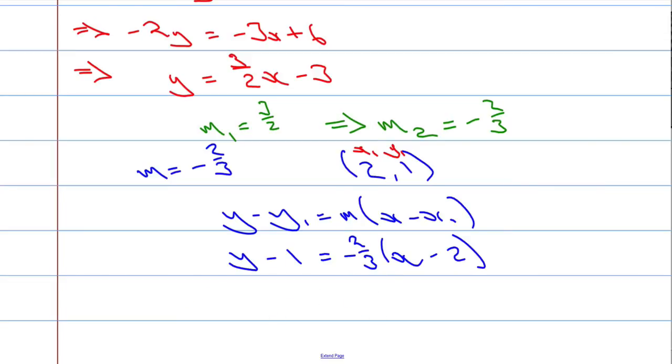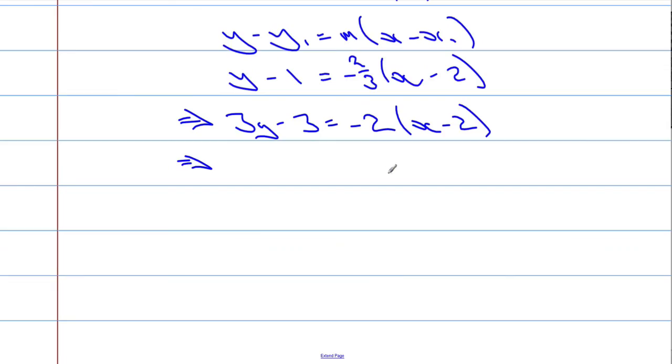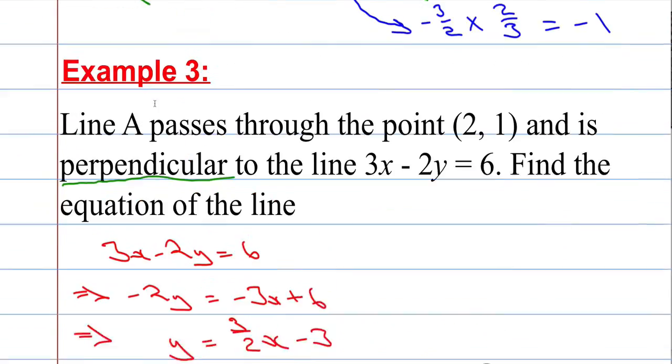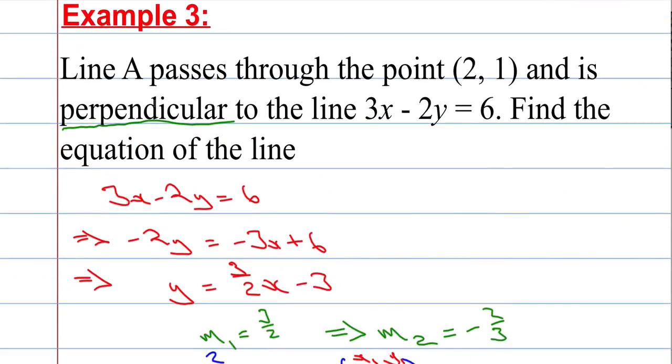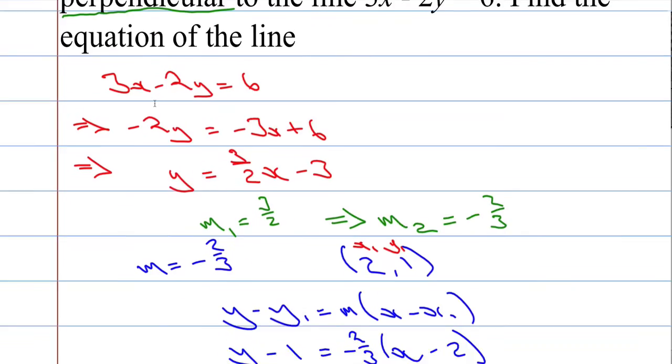Let's tidy this up now. I'm going to multiply everything by 3. So we get 3y subtract 3 equals negative 2 times x minus 2. And then we're going to expand out the bracket and get it in the form ax plus by plus c equals 0. So negative 2 times x is negative 2x, negative 2 times negative 2 is positive 4. Take everything to one side and we get 2x plus 3y, and then subtracting 4 from both sides, minus 7 equals 0. So this line here, provided we've done everything correctly, should be perpendicular to 3x minus 2y equals 6.